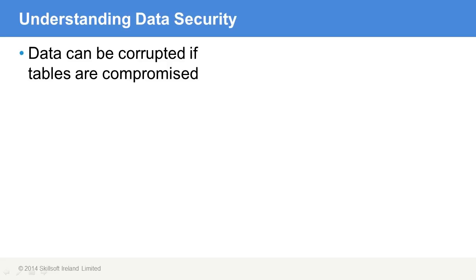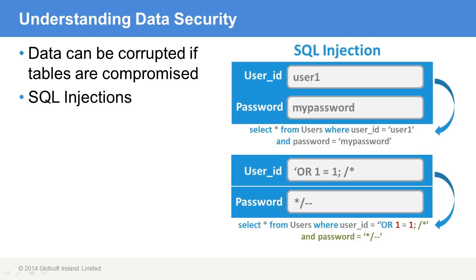The most common one to be aware of is what's known as a SQL injection. This means that code is actually inserted into an application where it expects to see values. At the top, we're seeing some kind of application where a user is requested to identify themselves for authentication. The user ID is inserted as 'user one' and the password is entered as 'my password.' The code running behind that is selecting star from the users where the user ID equals the entered value and the password they just supplied, returning all information about that user.